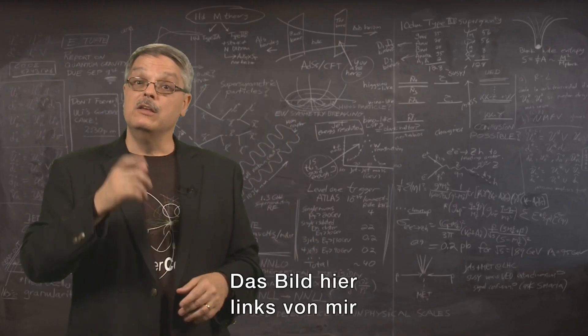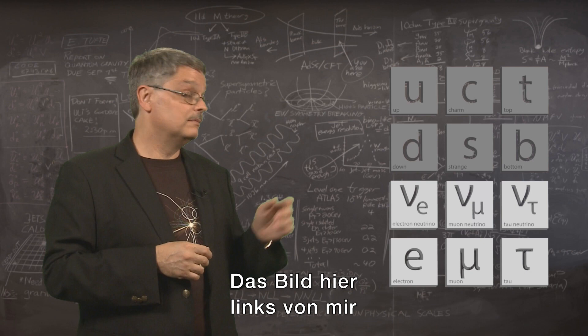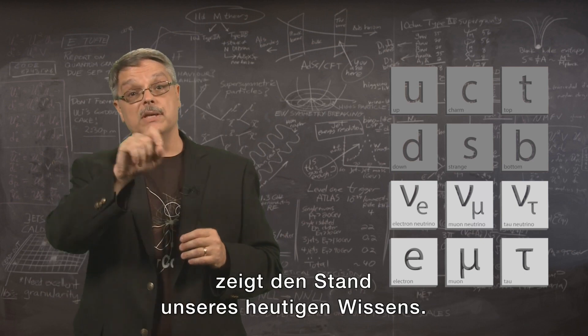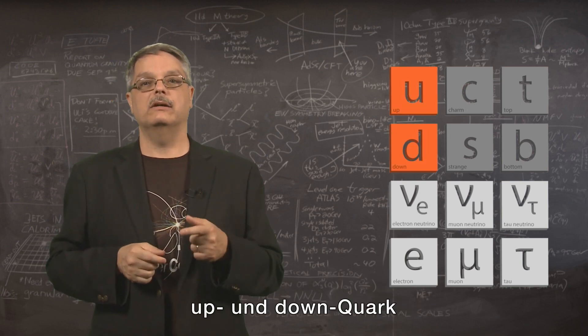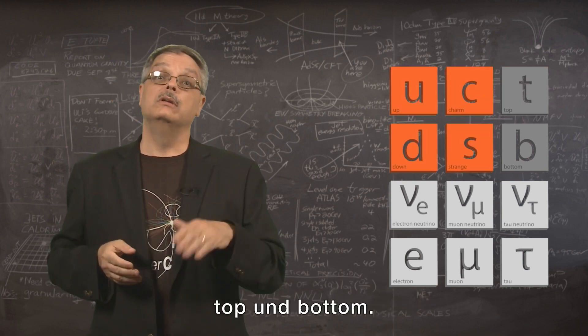Well, what do we know? The picture off to my left embodies our current best understanding. There are six quarks with kind of silly names called up and down, charm and strange, top and bottom.